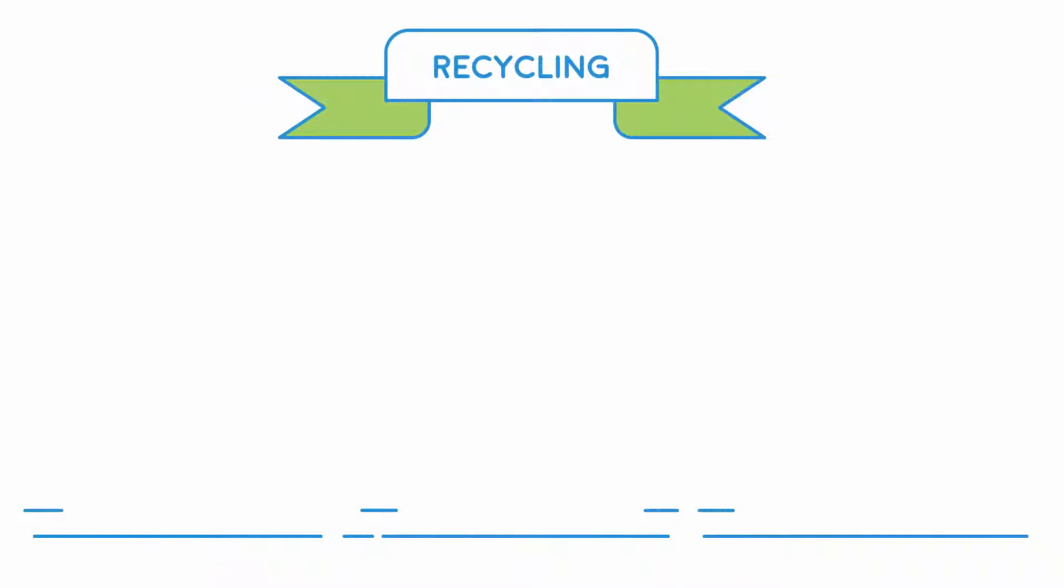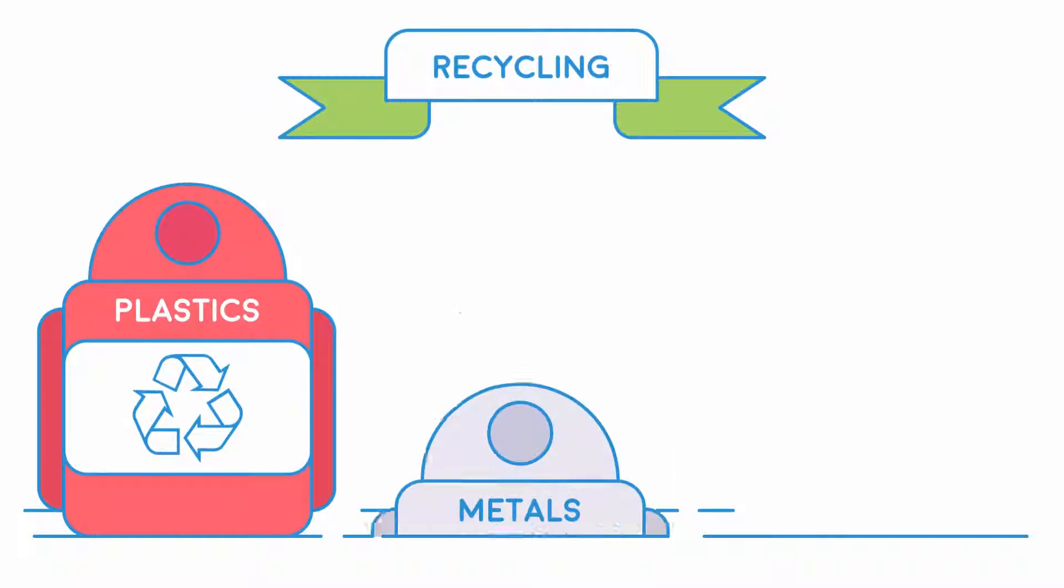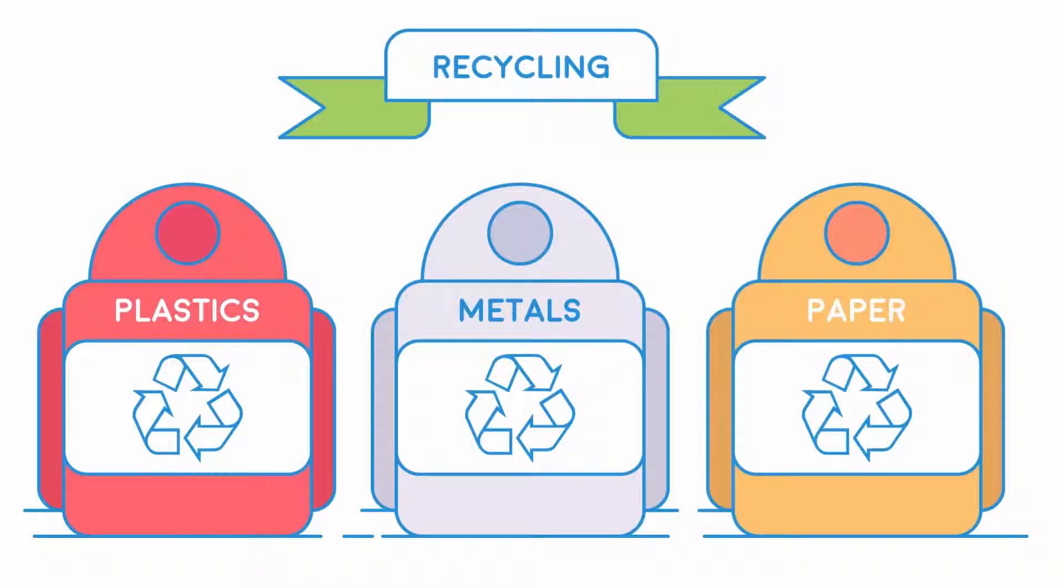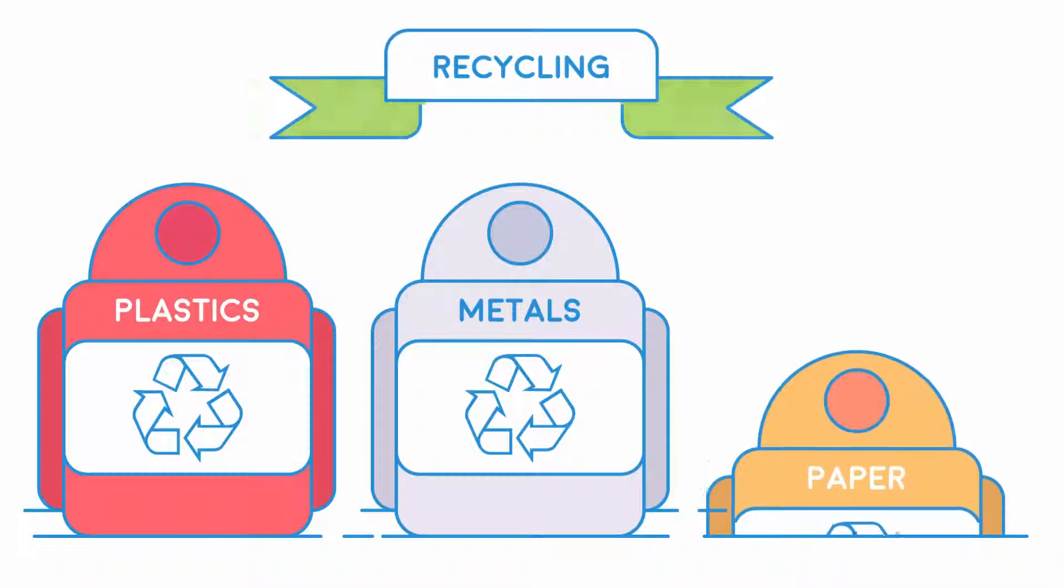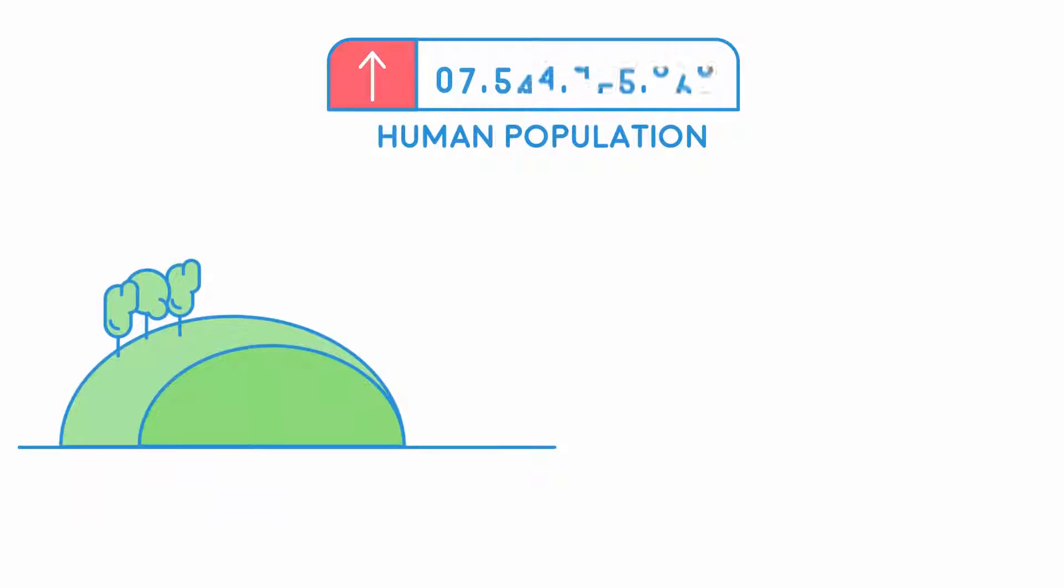Recycling plastics, metals, and paper means that fewer resources need to be extracted from the earth, as we can reuse the already extracted products, meaning more resources for future generations. As the human population grows, so does the demand for food.